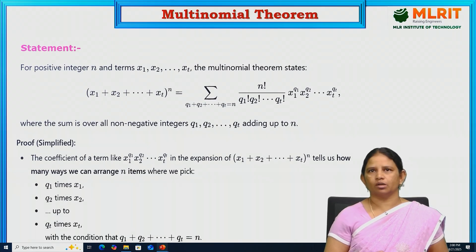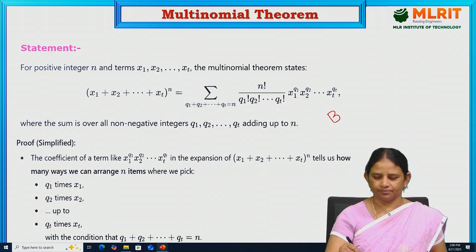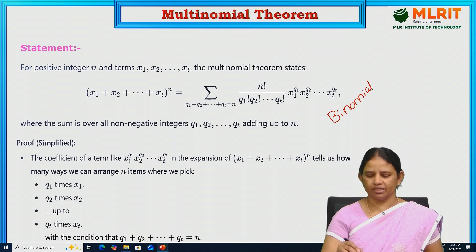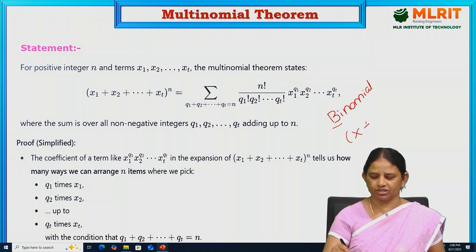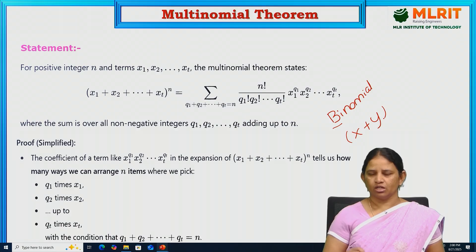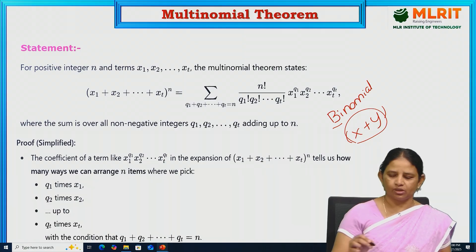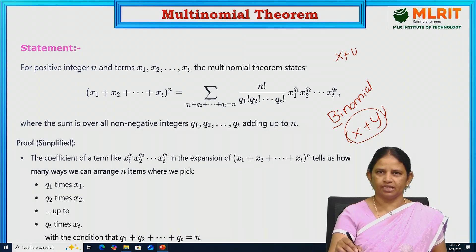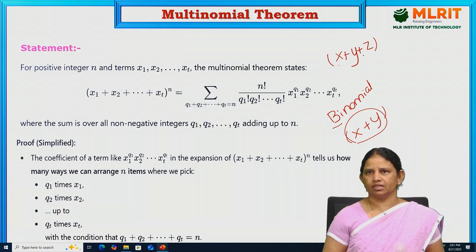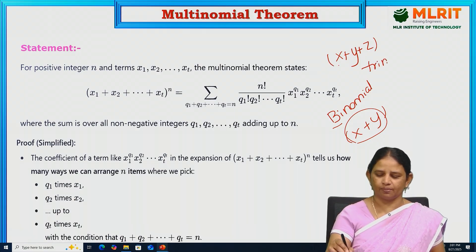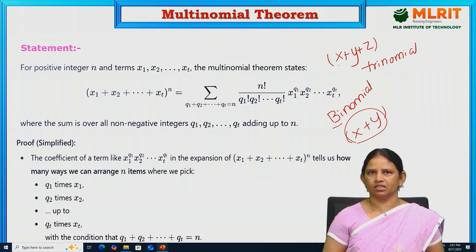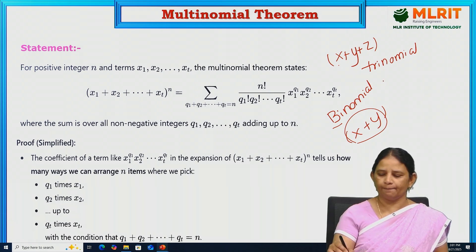Before starting the multinomial theorem, what is meant by binomial? As the name implies, it consists of two terms in the expansion, that is x plus y. Only two terms present in the expansion — we call it a binomial. If three terms are present, x plus y plus z, we call it a trinomial. If more than three terms are present in the expansion, then we call it a multinomial.